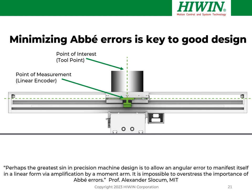Let's return to the subject of Abbe errors. An encoder in a motion system provides correct positioning information only at the point of measurement — for a linear encoder, where the read head is located. The point of interest in our process, often called the tool point, is located some physical distance away from the encoder. Any deflections occurring in the motion system — those six degrees of freedom — will result in errors at the tool point: deviations between where the encoder thinks the tool point is versus where it actually is. Abbe errors are the most troublesome because they amplify by the offset distance. The distance between the tool point and the measurement point multiplied by the sine of the offset angle equals your Abbe error.